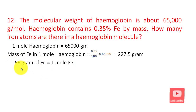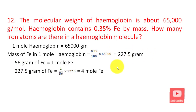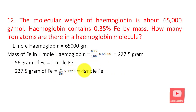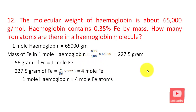The mass of iron is about 227.5 grams. Dividing by 56 grams per mole gives approximately 4 moles of iron per mole of hemoglobin.